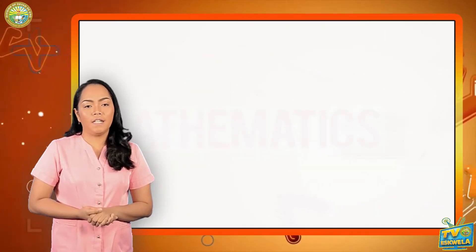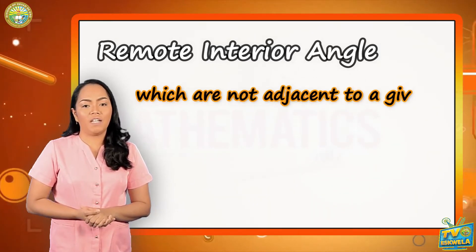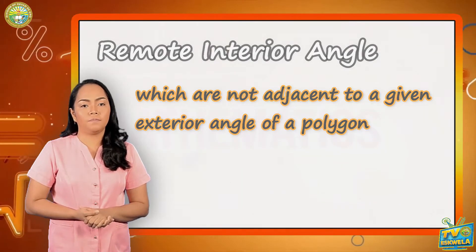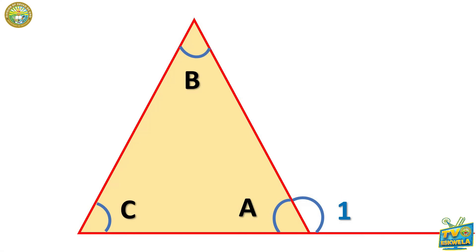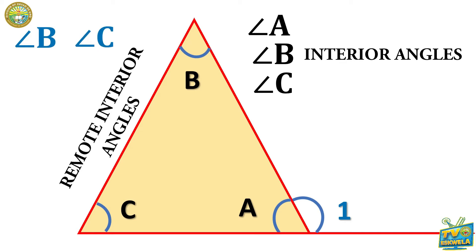The third keyword is the remote interior angle, which are angles not adjacent to a given exterior angle of a polygon. In the figure, angles A, B, and C are interior angles since they are found inside the triangle. Angles B and C are remote interior angles of angle 1, which is the exterior angle in the given figure.